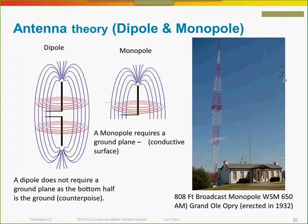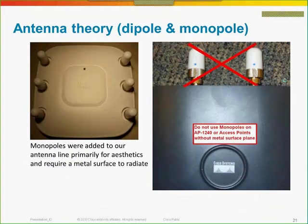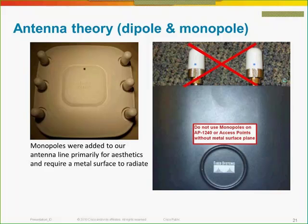The real takeaway here is that a monopole is designed for APs with a ground plane or a surface. If you look at the 3500 AP on the left, you can use monopoles because it has a metal ground. But you don't want to use a monopole on an AP 1240 because there's no significant ground plane — it won't radiate well, won't give you that nice beach ball effect, and you'll take performance hits.